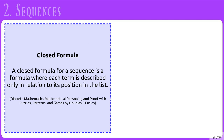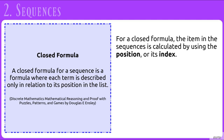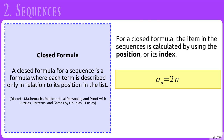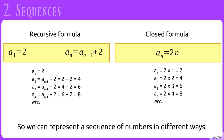Now let's look at a closed formula. A closed formula for a sequence is one where each term is described only in relation to its position in the list. We won't have a starting term — just a sub n equals some formula, and n is used to calculate the value. A simple closed formula is a sub n equals 2 times n. So a sub 1 is 2 times 1 equals 2, a sub 2 is 4, a sub 3 is 6, and so on. Both a recursive formula and a closed formula can represent the sequence 2, 4, 6, 8.